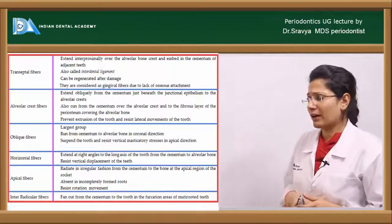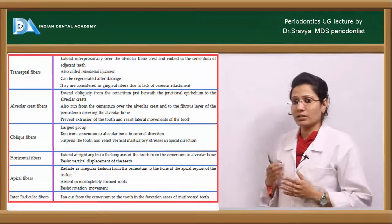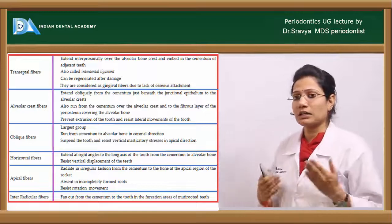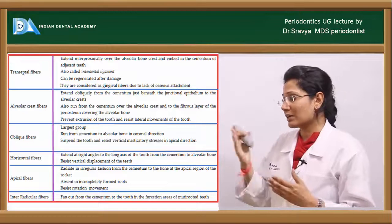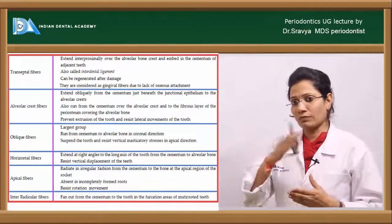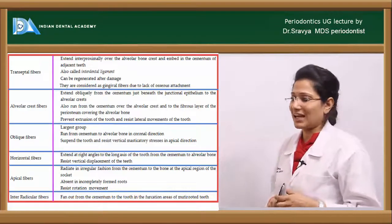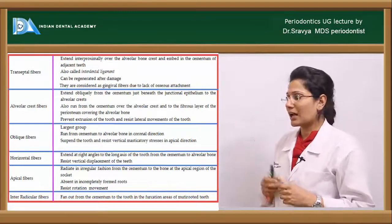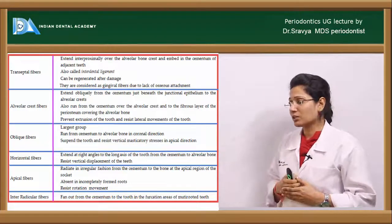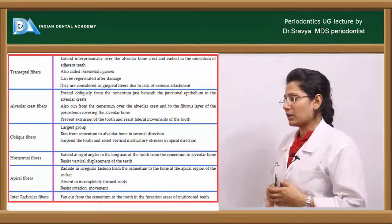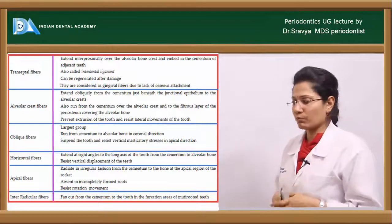The transseptal fibers, also called the interdental ligament, can be regenerated immediately after damage — they are the first to get destroyed and the first to regenerate. They extend interproximately over the alveolar crest bone, embedded in the cementum of adjacent teeth. They are considered gingival fibers because they lack osseous attachment. The alveolar crest fibers extend obliquely from the cementum just beneath the junctional epithelium to the alveolar crest, and they prevent extrusion and resist lateral movements of the tooth.